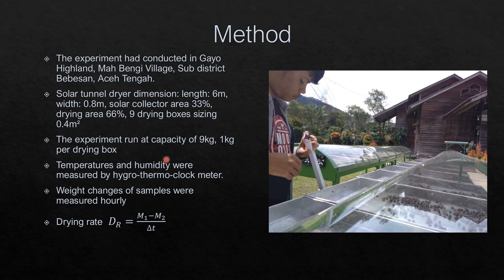We dried about 9 kg of coffee cherries during the experiment. During the drying process, we evaluated several parameters, for example the drying temperature and humidity, measured hourly using a hygro-thermometer. We also measured the weight changes of samples placed in small aluminum boxes in the center of each drying box. At the end, we calculated the drying rate using the ratio of moisture dry-basis changes to the drying time. The moisture content of coffee beans was also measured using the oven method.